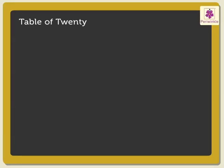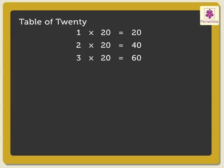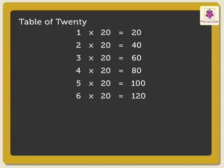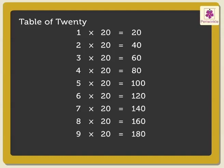Lastly, the table of 20: 1×20 is 20, 2×20s are 40, 3×20s are 60, 4×20s are 80, 5×20s are 100, 6×20s are 120, 7×20s are 140, 8×20s are 160, 9×20s are 180, 10×20s are 200.